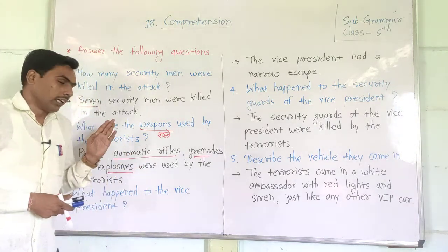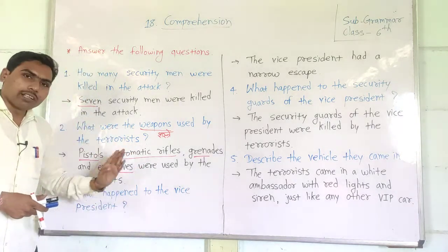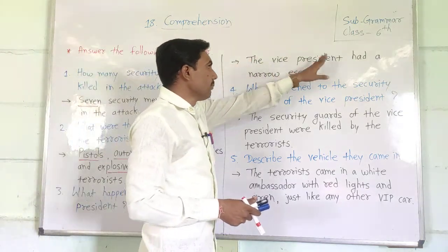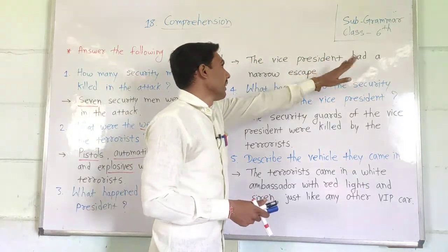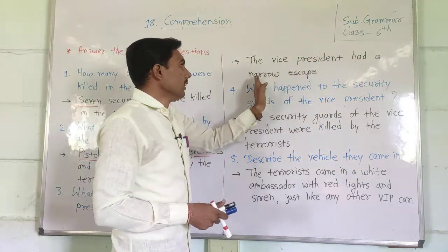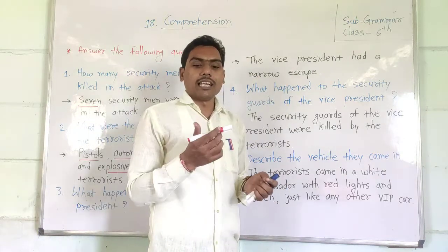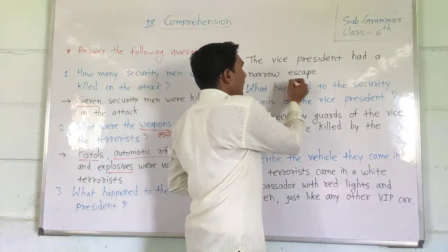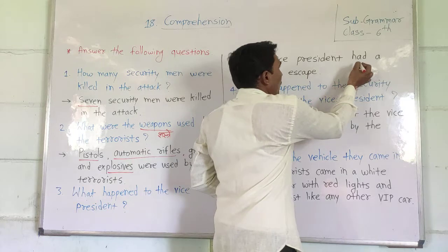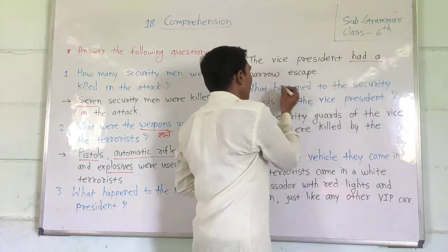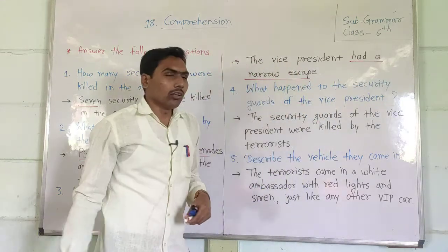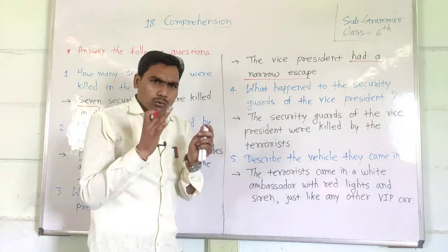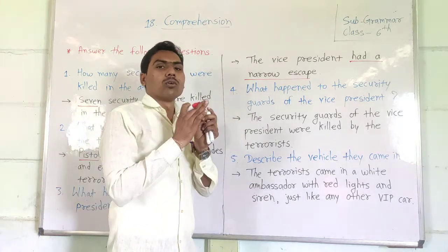Now the next question is: what happened to the vice president? As per the passage, we can write the answer — the vice president had a narrow escape. 'Narrow escape' means he barely survived.